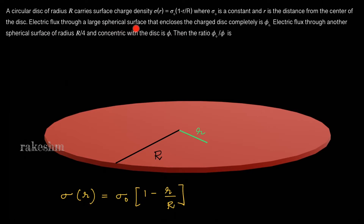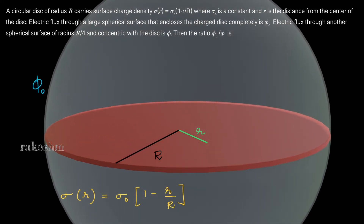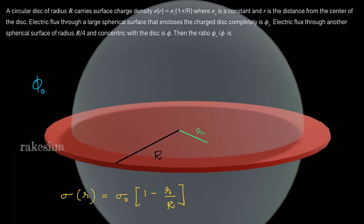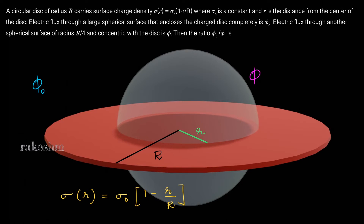Electric flux through a large spherical surface that encloses the charged disk completely is phi_0. This spherical surface encloses the whole disk and the electric flux through it is phi_0. Electric flux through another spherical surface of radius R/4 concentric with the disk is phi. We need to find the ratio phi_0 by phi.